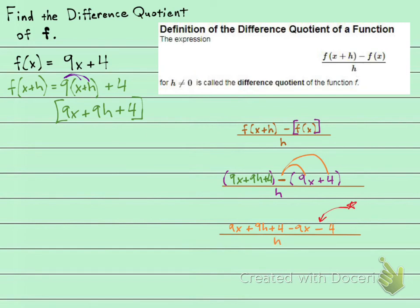Now, let's simplify our numerator. I see that I have 9x minus 9x. That's 0. I see that I have 4 minus 4. That is also 0.